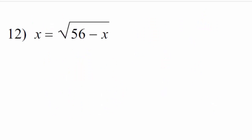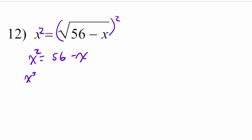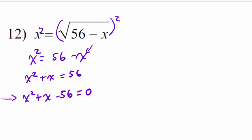The radical is already isolated, so we square both sides. We end up with x squared equals 56 minus x. We have a quadratic, so we force it to equal zero: add x to both sides, then subtract 56 from both sides, giving x squared plus x minus 56 equals zero. Now we factor this quadratic trinomial.